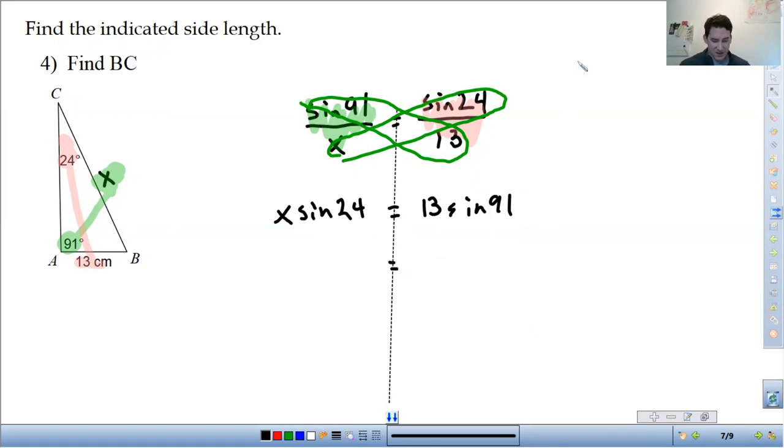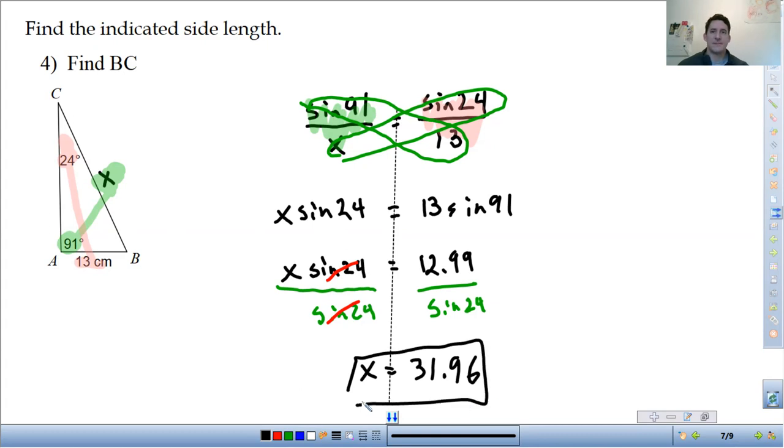So I can just, 13 times the sine of 91, I'll just go ahead and put that into a calculator. So sine of 91 times 13 comes out to 12.99. X times sine of 24, divide both sides by the sine of 24. Divided by sine of 24 equals 31.95, so you get X is equal to 31.96 rounded. So set up the proportion, cross multiply, and solve. So let's do one more example here.